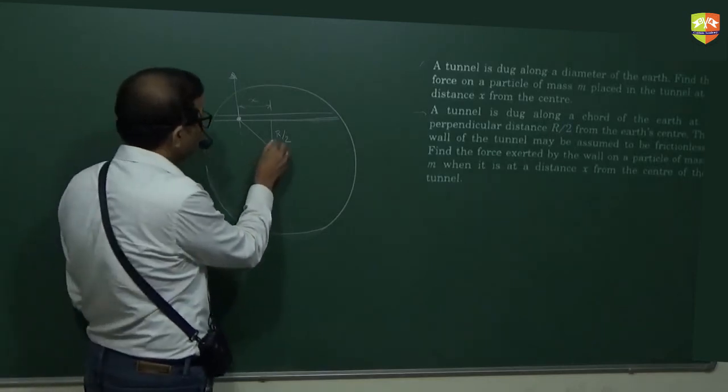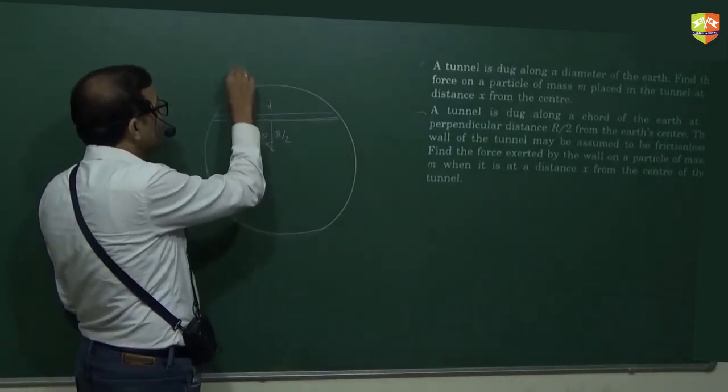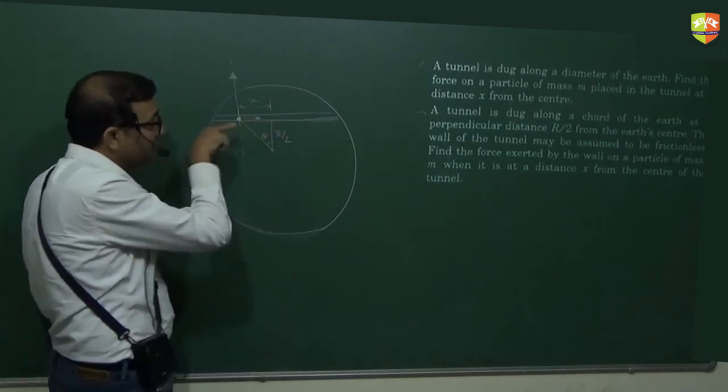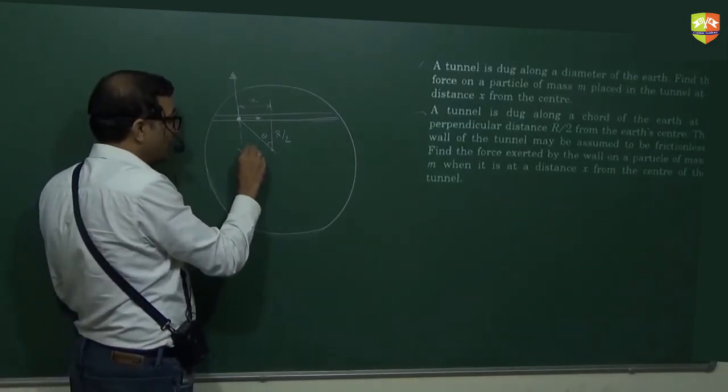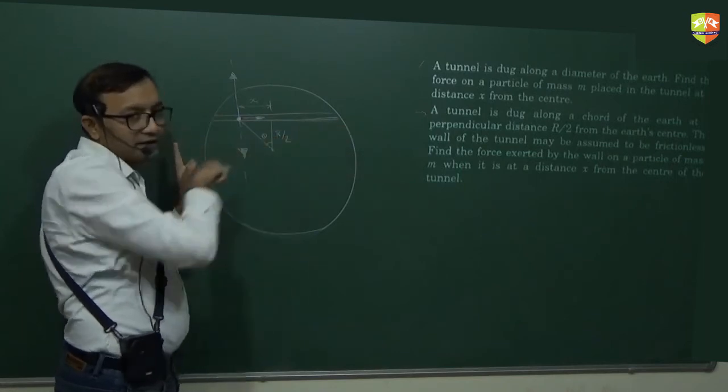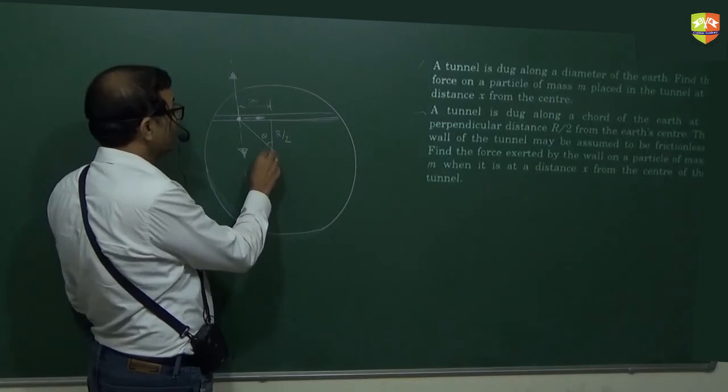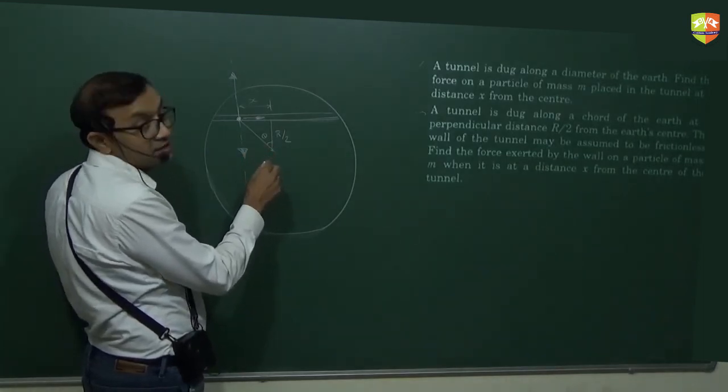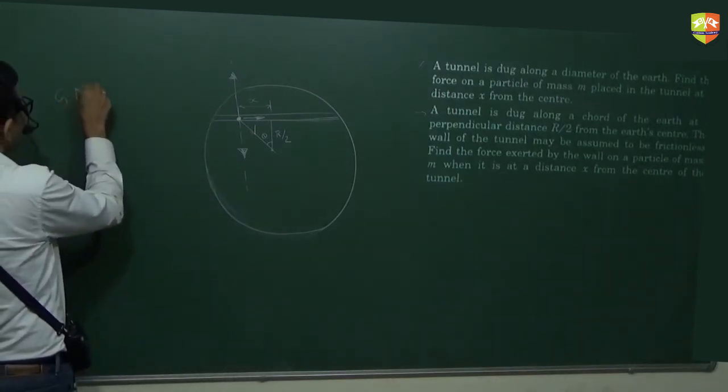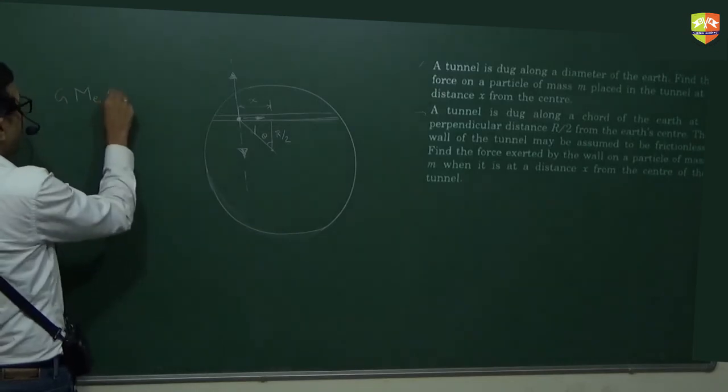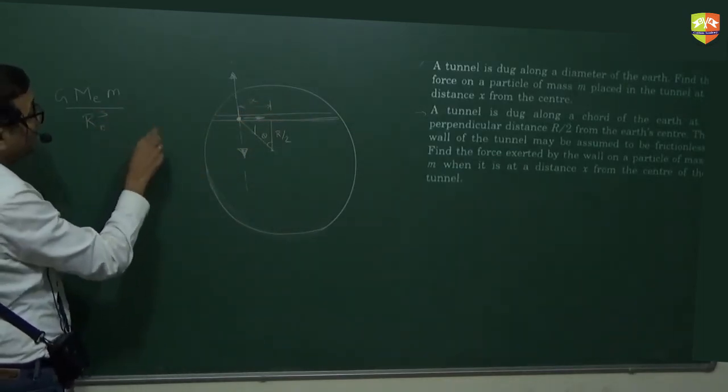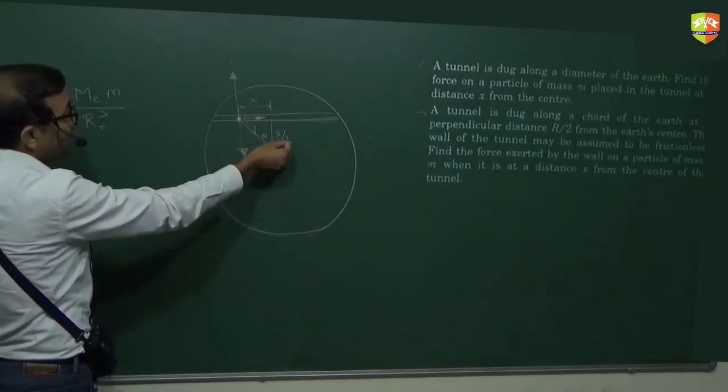Theta is known, right? If x is known, you can find theta. What is the problem? It's tan inverse theta, right? Now around this direction, you can balance the force. There will be an acceleration also in this direction because there is a net force in that direction. Friction is absent. One component of gravity will be acting this way and another component of gravity will be acting this way. This component of gravity balances the normal reaction, that component of gravity creates an acceleration. So gravity force is how much? It's going to be G mass of, so we just derived, we can use that. R e cube into x, into the distance from the center from here to here, which is how much? R by 2 by cos theta. So R by 2 divided by cos theta. This is what we have derived the previous question.